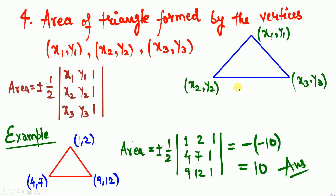Next, suppose three coordinate points (x1, y1), (x2, y2), and (x3, y3) are given as vertices of a triangle. To calculate the area of this triangle, apply the formula: area equals plus or minus half of the determinant of the 3×3 matrix [x1, y1, 1; x2, y2, 1; x3, y3, 1]. The plus or minus is used because area can never be negative.